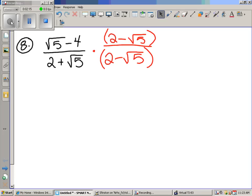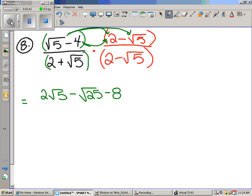And we have to do the most annoying thing ever. What do we have to do? Foil. I forgot to put parentheses around these to remind myself to foil. So this is two square root of five. This is going to be negative the square root of 25. This is going to be minus eight. And this is going to be plus four square root five, all over.